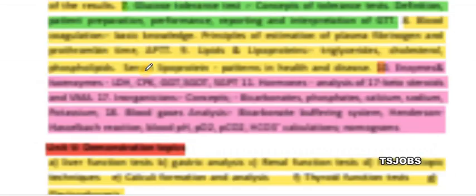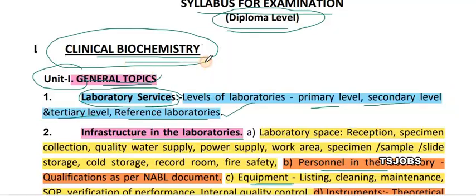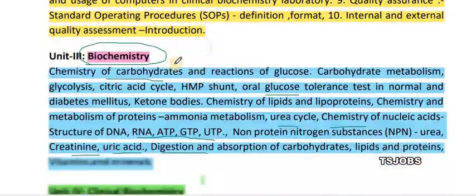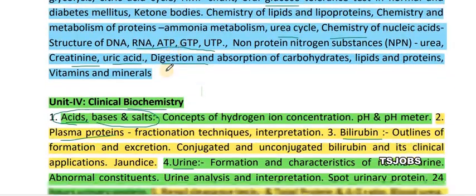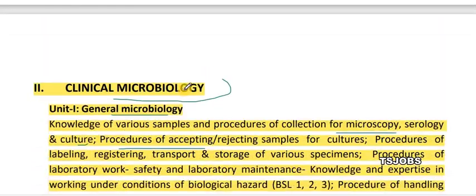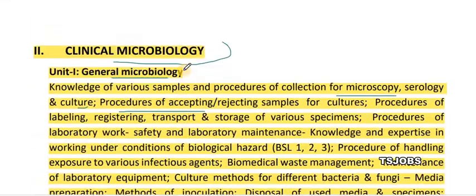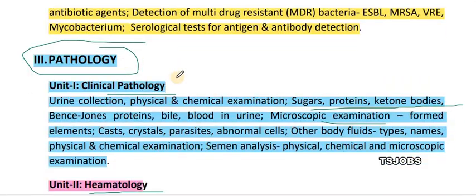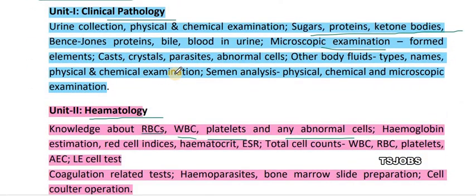To summarize: the first subject is clinical biochemistry with five units, clinical microbiology with five units, and pathology with five units. In the exam there are 80 questions and 20 questions across these subjects.